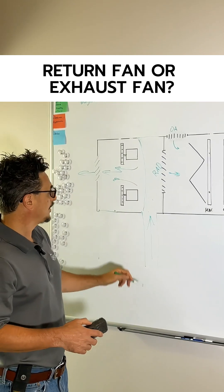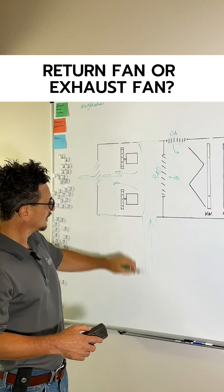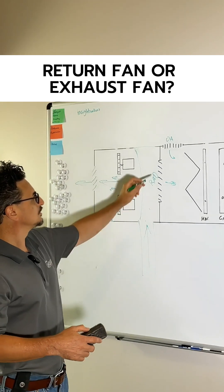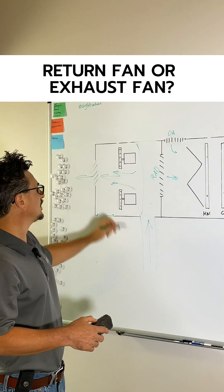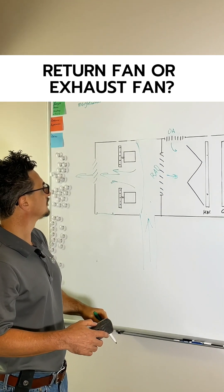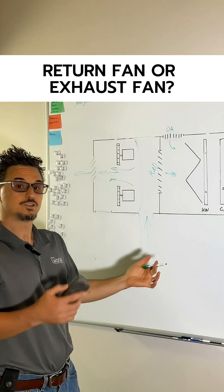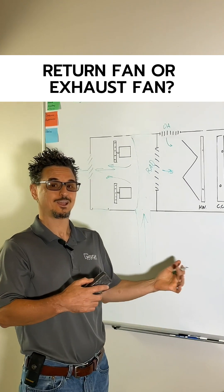And they'd also be sized to pull the air back through the return air duct, because this damper would be shut, you'd be pulling 100% outside air, and then this would be wide open. Okay, so that's the difference between the return air fans and exhaust fans.